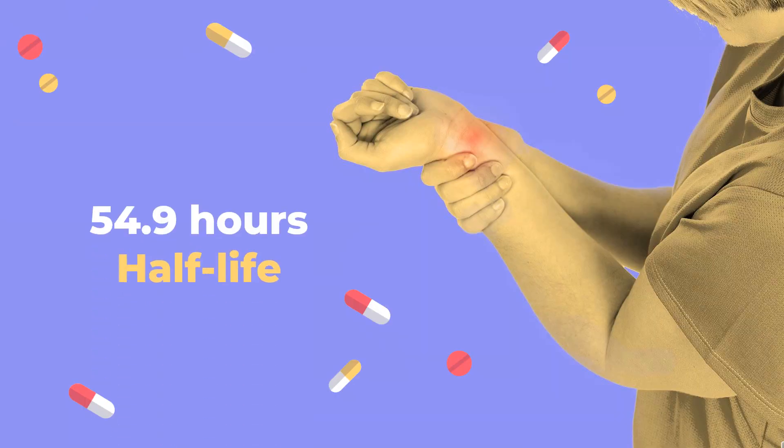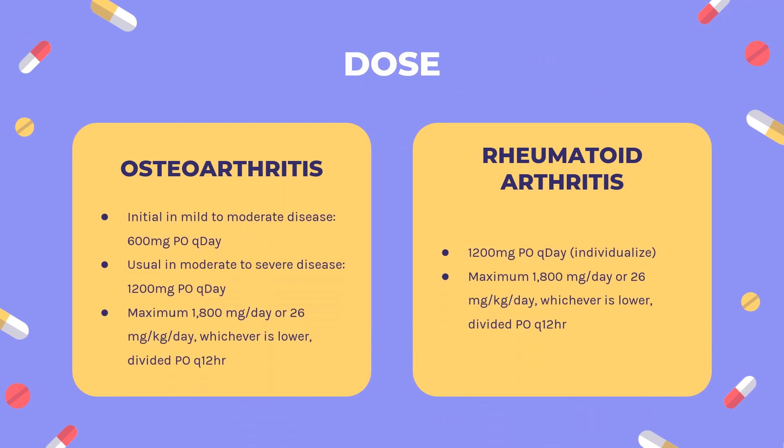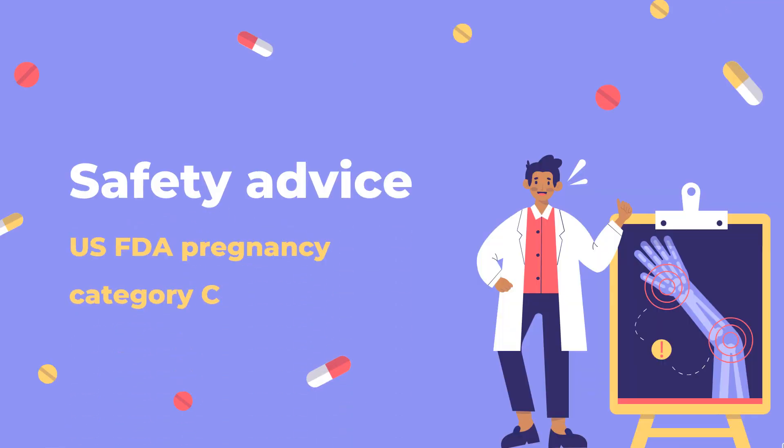Half-life: 54.9 hours. Safety advice: Pregnancy Category C. Oxaprozin is contraindicated during late pregnancy because it may accelerate closure of the fetal ductus arteriosus.